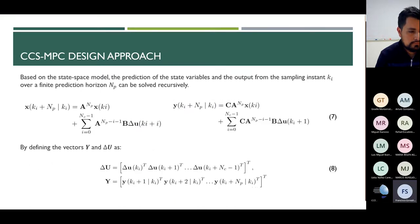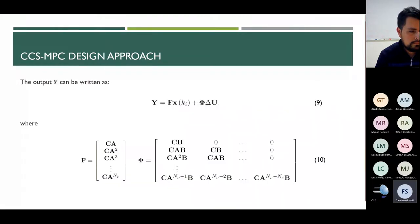Based on the state space model, we can do the prediction of the state variables and the output from the sampling instant k over a finite prediction horizon N_p. This prediction can be solved recursively as shown in Equation 7. By defining the vector Y and delta U, we can express the output prediction in matrix form as in Equation 9. It can be seen in Equation 10 that if a large prediction horizon is used, the computation of matrices F and Phi increases.